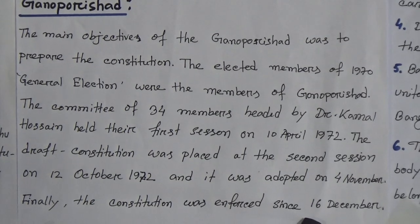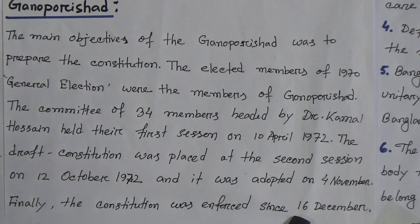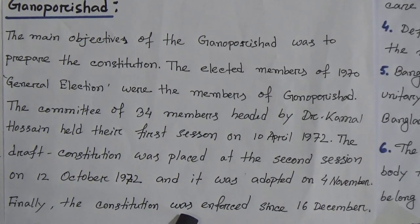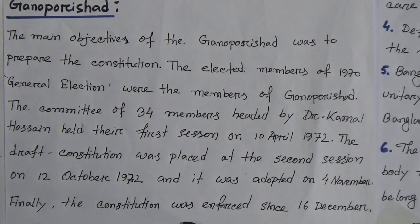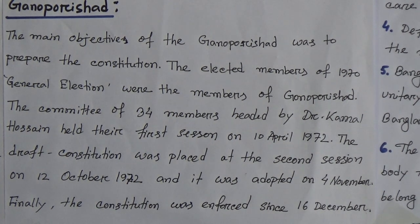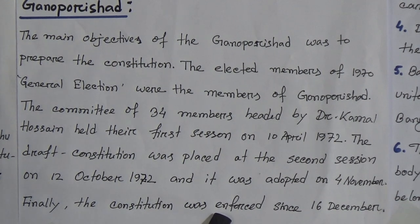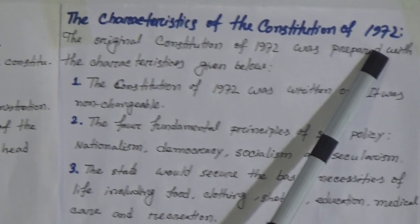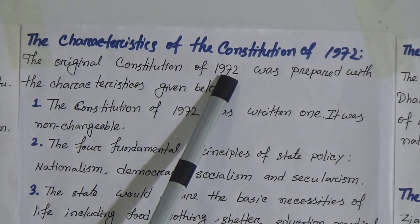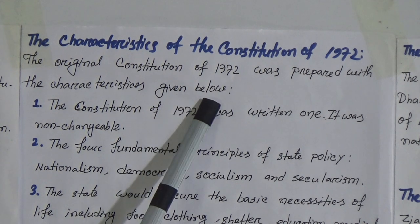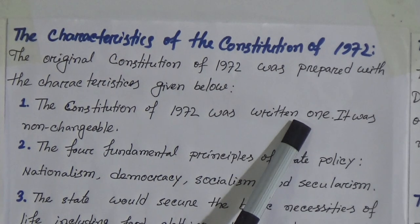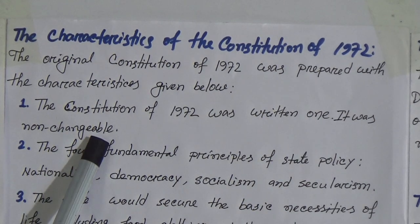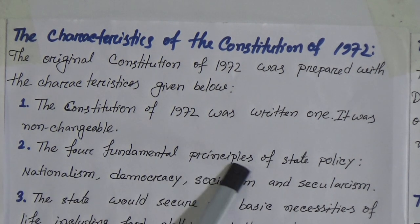The draft Constitution was adopted on 4th November and the Constitution was enforced since 16th December 1972. No other country in the world has prepared a Constitution as early as we did — just after independence in 1971. Now the characteristics of the Constitution of 1972: number one, the Constitution of 1972 was a written one and it was non-changeable. Number two, the four fundamental principles of state policy which the People's Republic of Bangladesh follows.